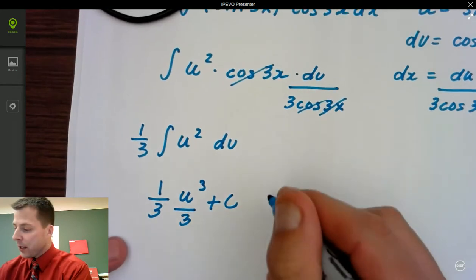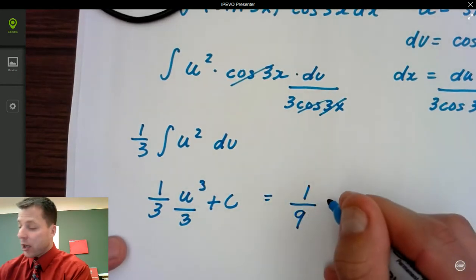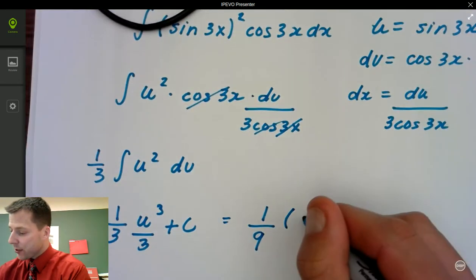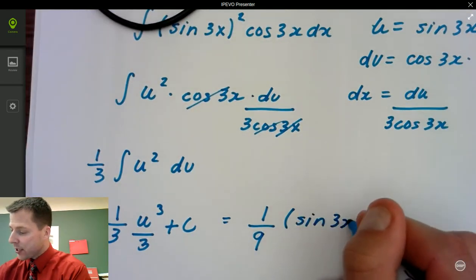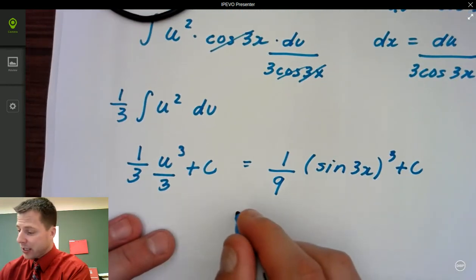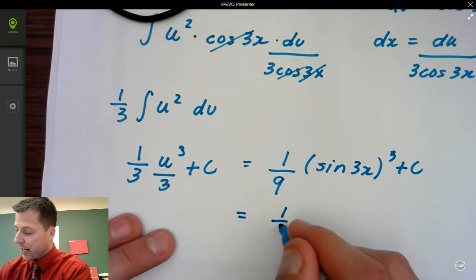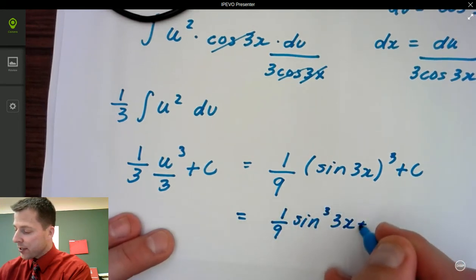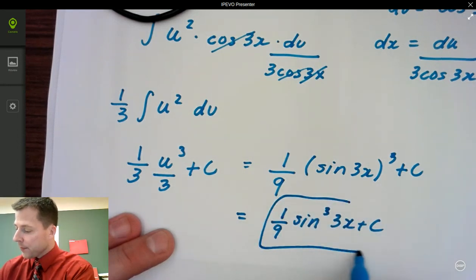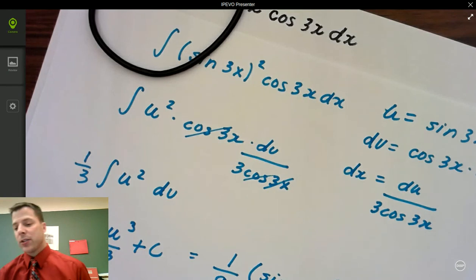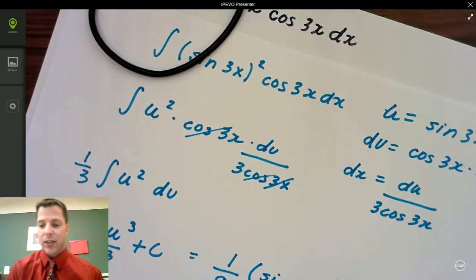That's going to equal one-ninth. Our u value, remember, was sine of 3x. So sine 3x cubed plus c. You can rewrite this if you want as one-ninth sine cubed of 3x plus c. Okay, everyone. So that's a few examples of how to use u substitution and the change of variables. If you guys have any questions or comments, let me know and we'll see you next time.